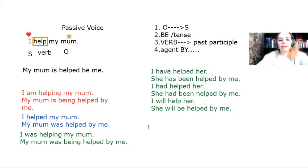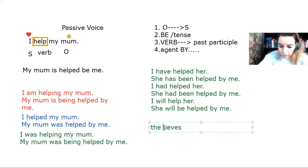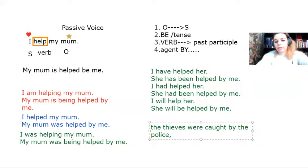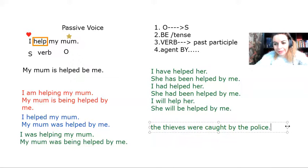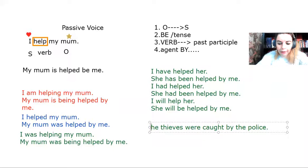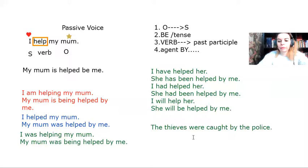So if I have a sentence like the thieves were caught by the police. I could skip this part where it says by the police because of course, we know that the police catches the thieves. So we mostly care about the fact that they were caught, something happened to them, and not who did it.